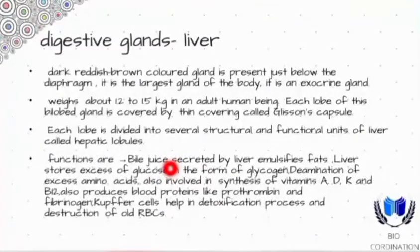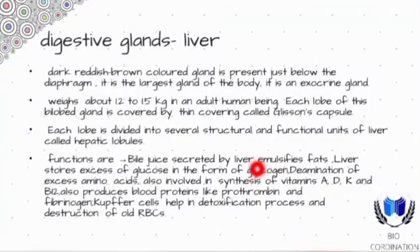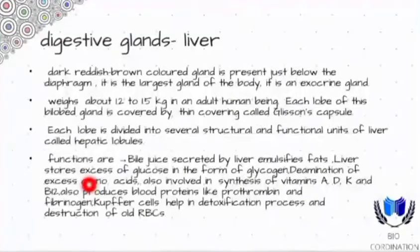Bile helps in the digestion of fat through emulsification. The liver also stores excess glucose in the form of glycogen. It also performs deamination of excess amino acids — deamination means to remove the amino group from the molecules.